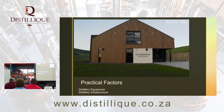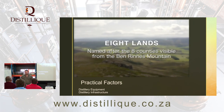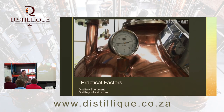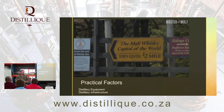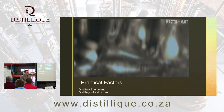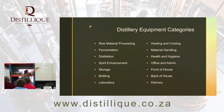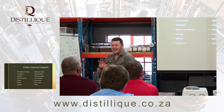Now, practical factors — things to keep in mind regarding the premises: the distillery equipment and the distillery infrastructure. What equipment do you need, how do we fit it in, and what else does the equipment need to function? The categories of distillery equipment are: raw material processing, fermentation, distillation, spirit enhancement, storage, bottling, laboratory, heating and cooling, material handling, health and hygiene, office and admin, front of house, and back of house delivery.